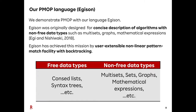In this presentation, we demonstrate PMOP using our language EGISON. EGISON was originally designed for concise descriptions of algorithms with non-free data types, such as math sets, graphs, and mathematical expressions. EGISON has achieved this mission by user-extensible non-linear pattern-matching with backtracking.